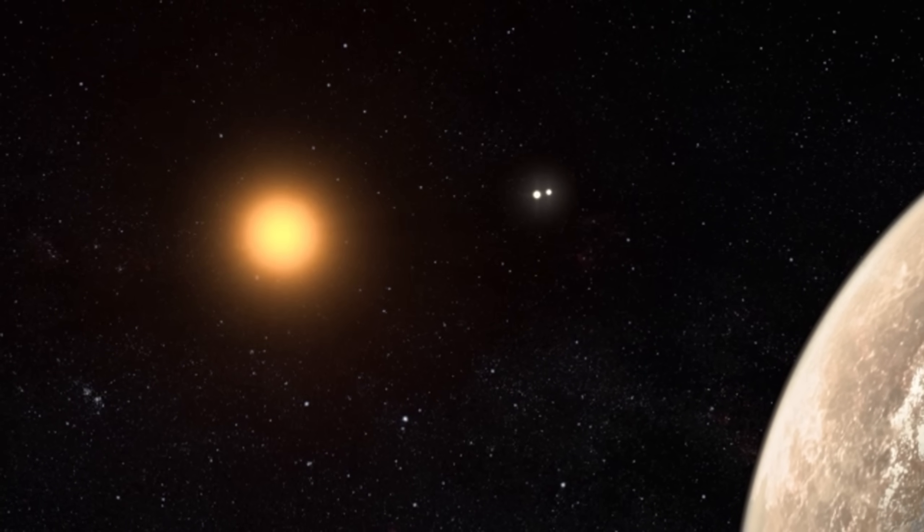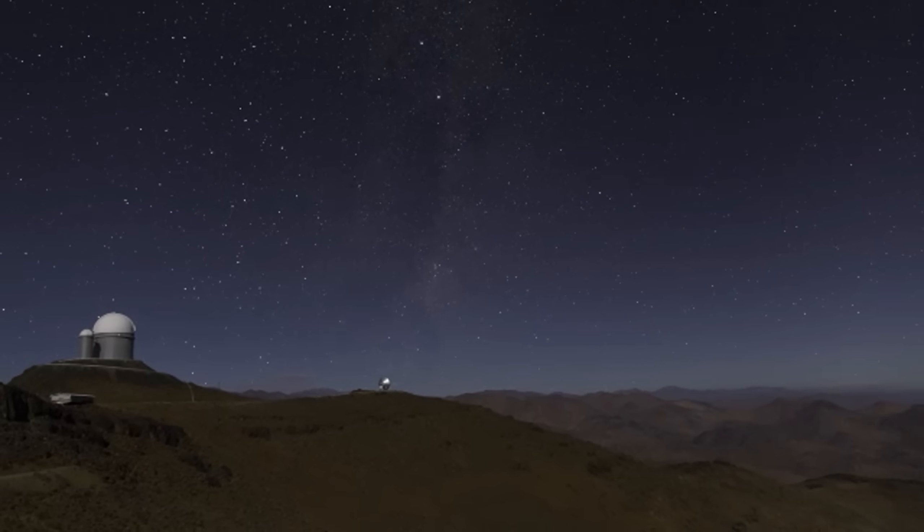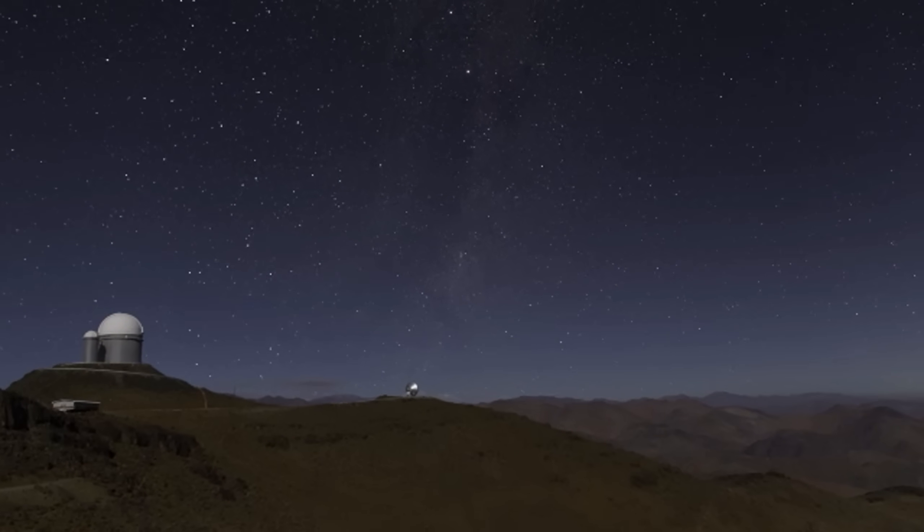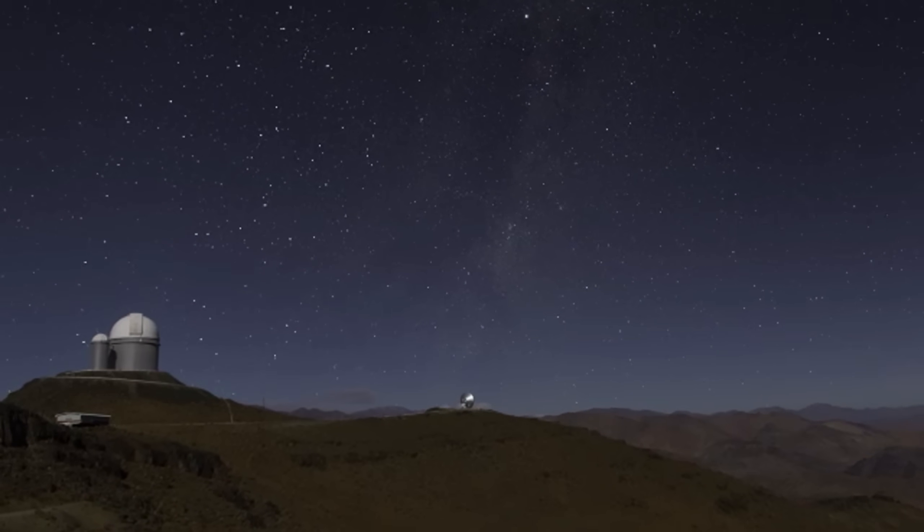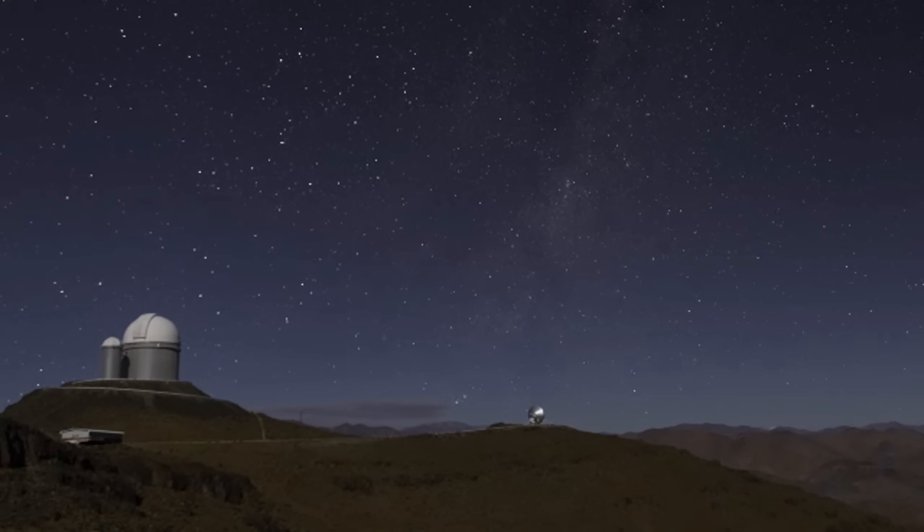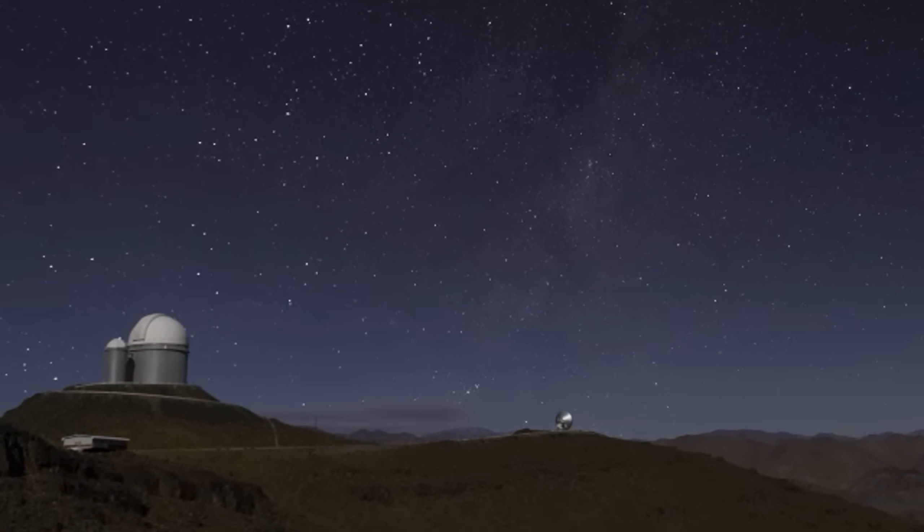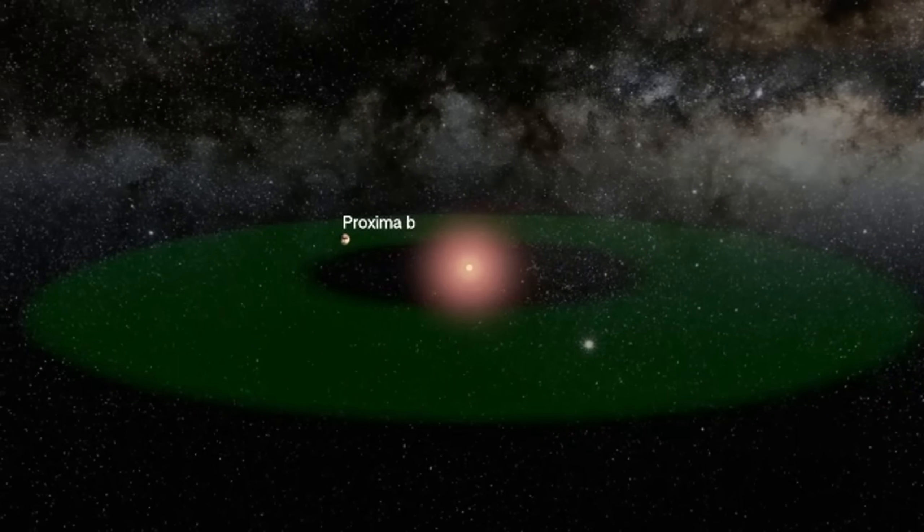The exoplanet's potential habitability has spurred interest among astronomers, making it a prime target for the James Webb Space Telescope's observational capabilities. Proxima Centauri B, Earth's cousin, is not just any ordinary rock. This planet is a mystery and a wonder. Could it be another Earth, complete with seas and many kinds of life?